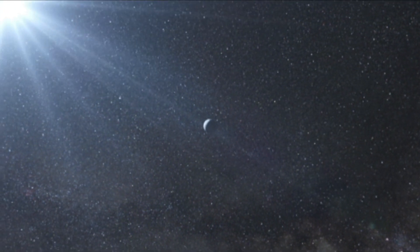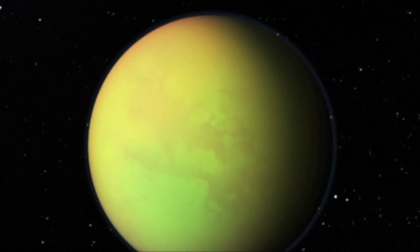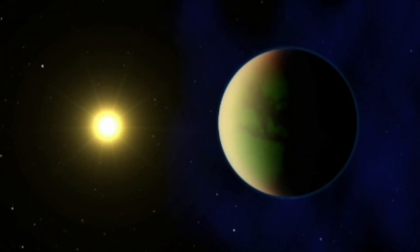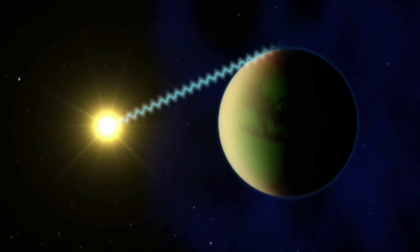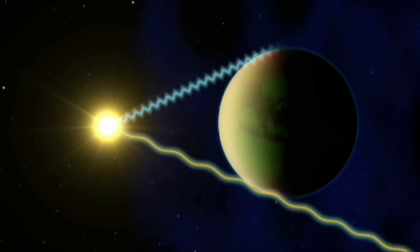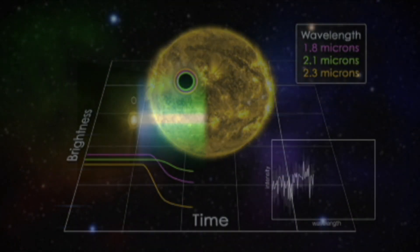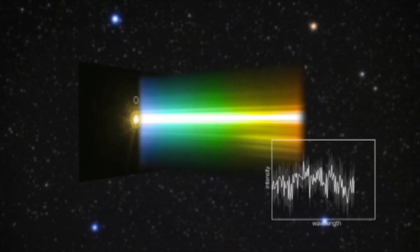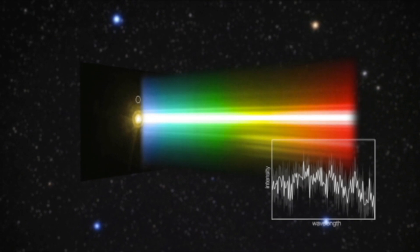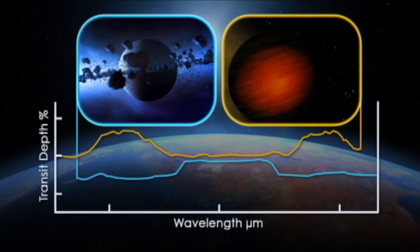To do this, it will study the atmospheres of planets around distant stars as the host star's light travels through any atmosphere the exoplanet might have. Using spectra to determine the composition, astronomers using JWST will be able to determine if there is any water as well as any tell-tale signs of life, like increased methane concentrations.